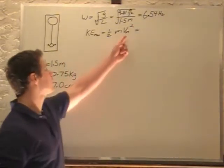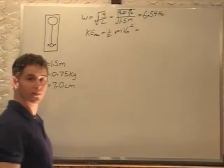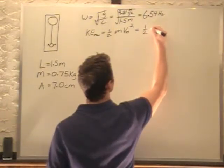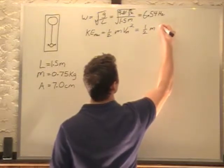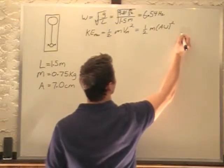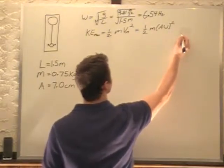V max is equal to A times omega, from our formula sheet, so 1/2 m v max squared, which is A omega squared.